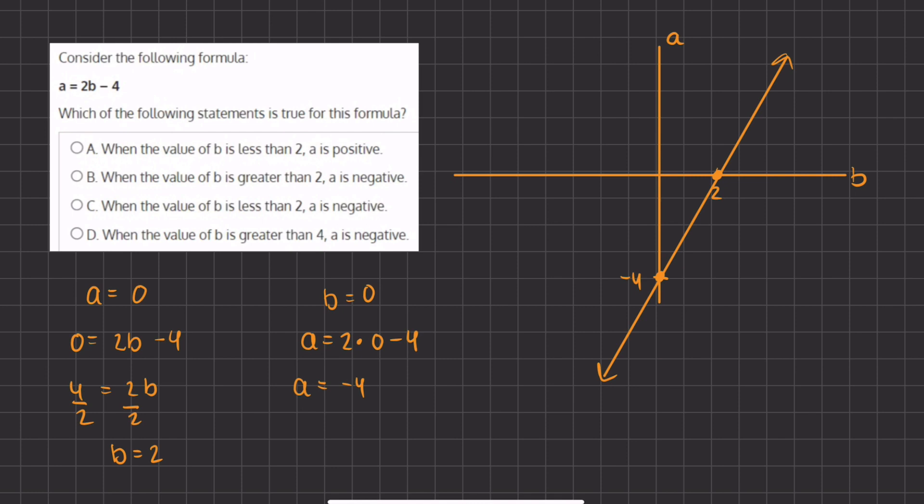Alright, so now that we have our linear function, let's take a look at our answers. When the value of b is less than 2, so let's go to the value of b as 2, and less than 2 is this direction, a is positive. Well, we see that all the a values are actually negative once we go to the left side of 2, and therefore a is incorrect.